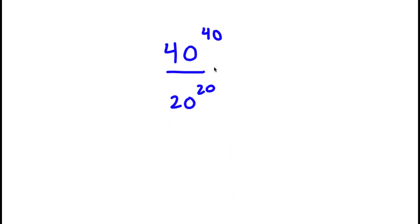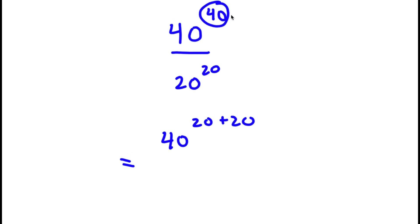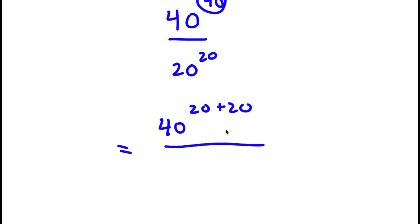So in this problem, I have 40 to the power of 40 over 20 to the power of 20. To solve this, I'm going to first rewrite the exponent 40 as 20 plus 20. So now I have 40 to the power of 20 plus 20 over 20 to the power of 20.